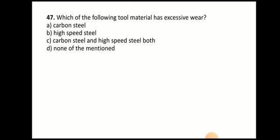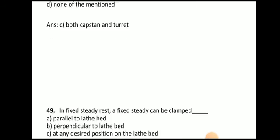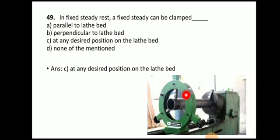Next question: which tool material has excessive wear? The answer is both carbon steel and high speed steel. Next question: which of the following are types of lathe machine? The answer is both capstan and turret are types of lathe machine. Next question: in fixed steady rest, where can the steady rest be clamped? The answer is at any desired position on the lathe bed.